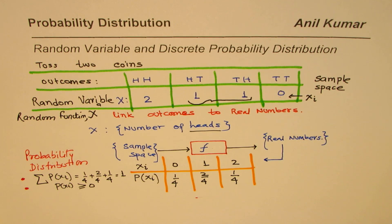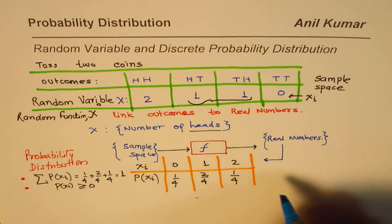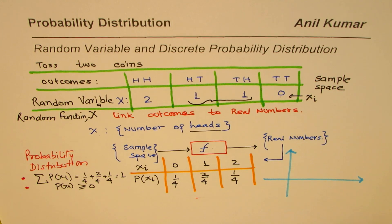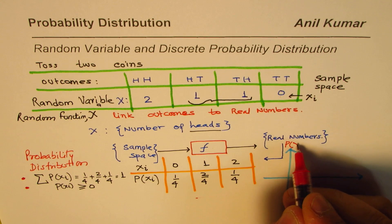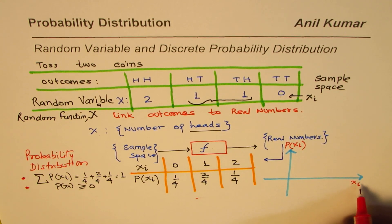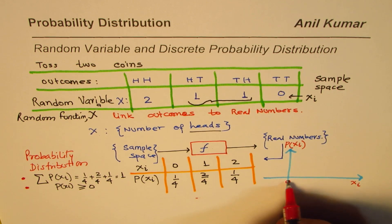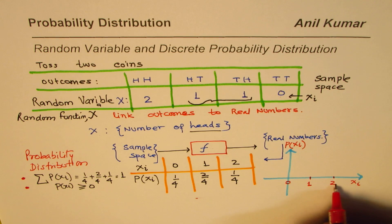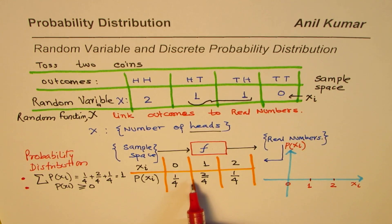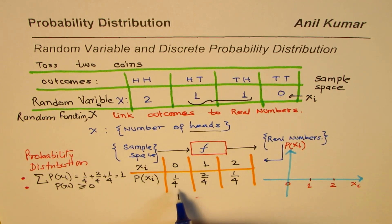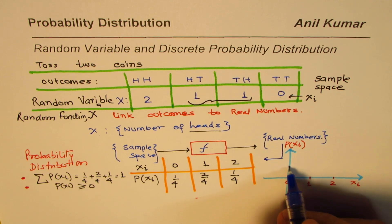When we say distribution, we display it on a graph. On the horizontal axis we draw the values of X, and on the vertical axis we mark the probability of each outcome x_i. The values of x_i for us are 0, 1, and 2. The bar at 0 heads has height 1/4.